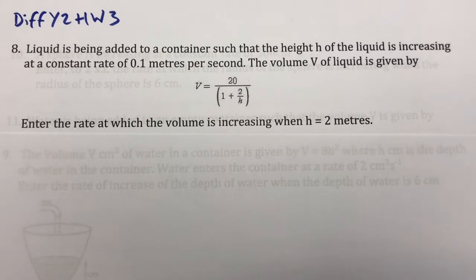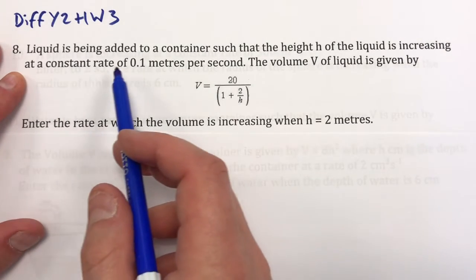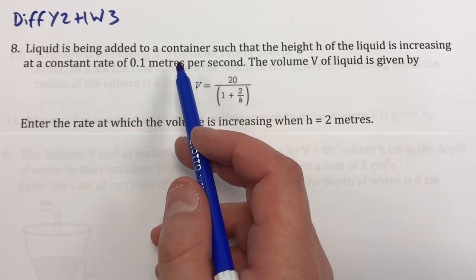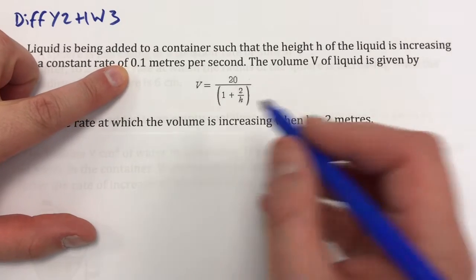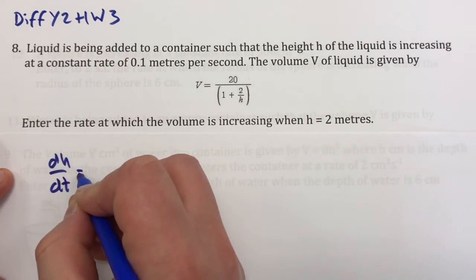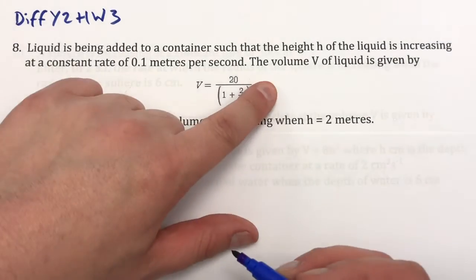Question 8 is a really nice question where it starts to get good. The liquid is being added to a container, a mystery container, don't know what the shape is, such that the height of the liquid is increasing at a rate of 0.1 meters per second, so dh/dt equals 0.1.